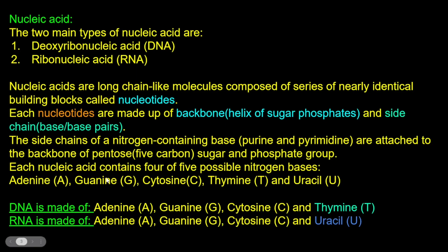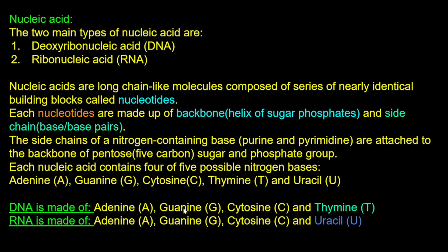Each nucleic acid contains 4 or 5 possible nitrogen bases. The 5 nitrogen bases are: adenine, guanine, cytosine, thymine, and uracil. DNA contains adenine, guanine, cytosine, and thymine. RNA contains adenine, guanine, cytosine, and uracil. In RNA, thymine is replaced by uracil.